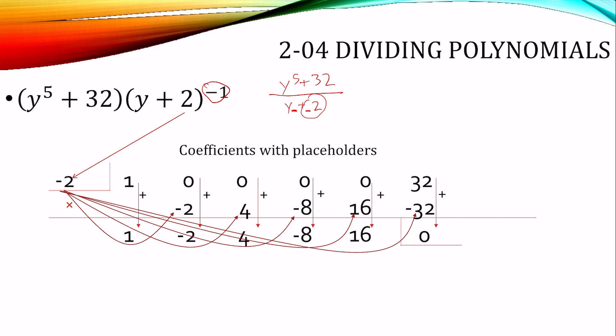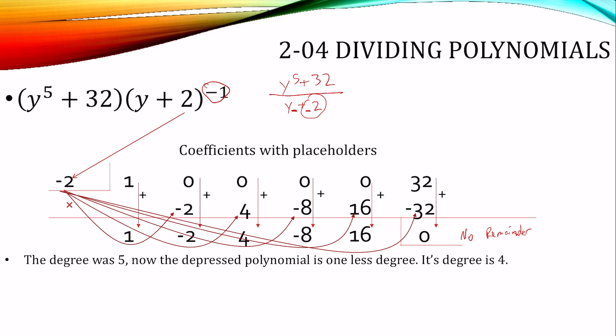There is no remainder — the remainder is 0. It was degree 5; we divided by y, so it's one less degree — degree 4. The numbers on the bottom are the coefficients: 1y to the fourth, negative 2y cubed, 4y squared, negative 8y, plus 16. There's no remainder, so there's no fraction at the end.